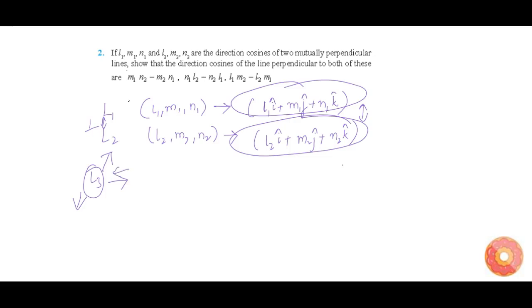Now, let us find the cross product of L1 and L2, which is given by the determinant: I, J, K; L1, M1, N1; L2, M2, N2.